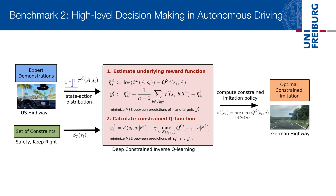We apply deep constrained inverse-Q learning in the application of transfer imitation learning. Assume a dataset of lane changes recorded on US highways. Traffic routes in distinct countries do not necessarily overlap, making it difficult to transfer the learned behavior. We propose to input an accompanying set of traffic routes in terms of constraints so as to learn optimal constraint imitation.